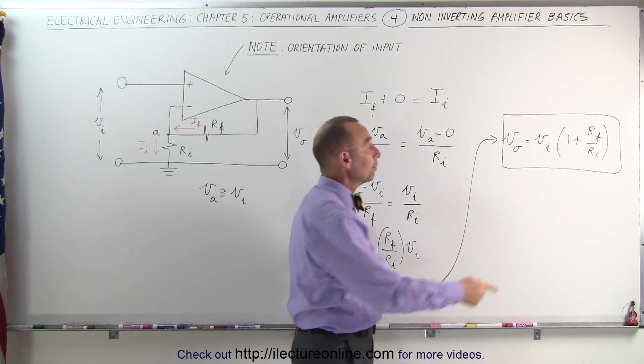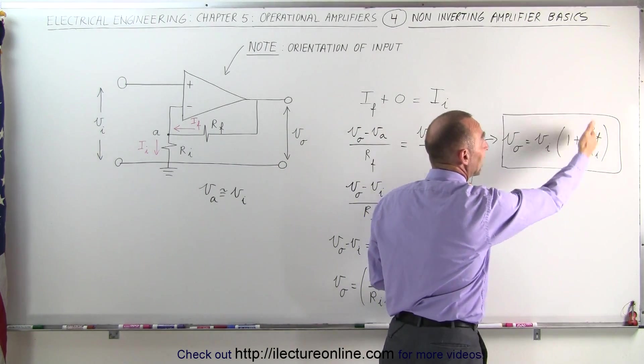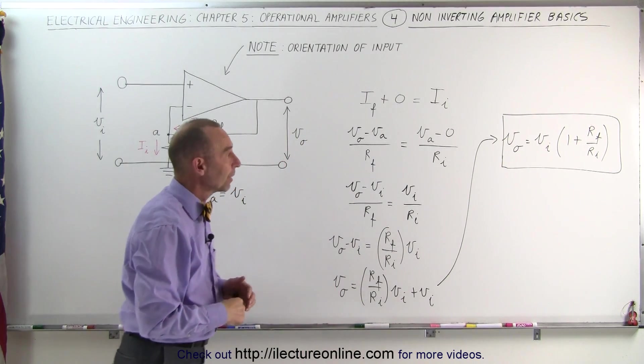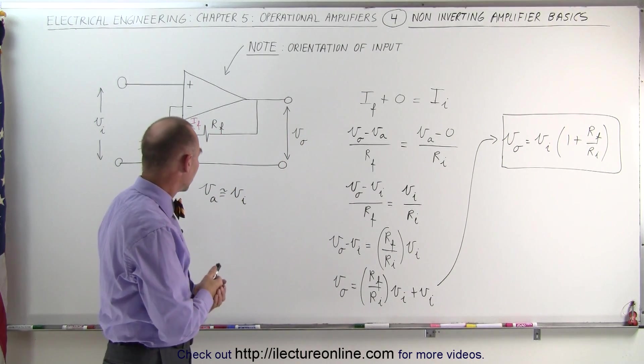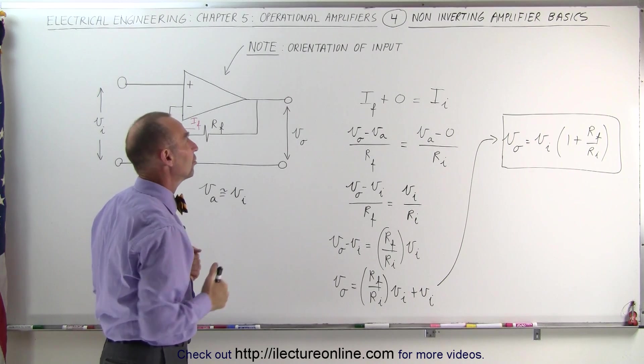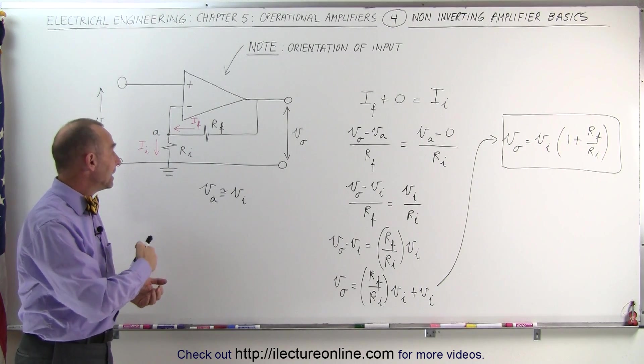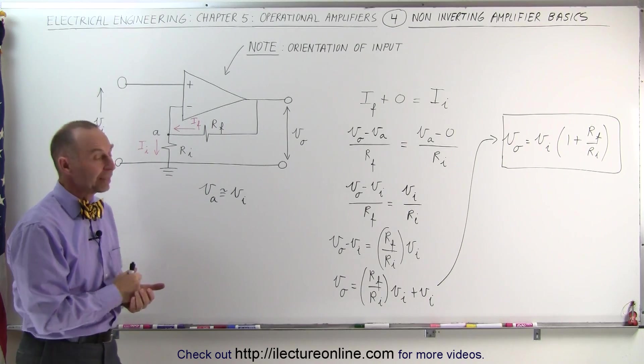Now, if the gain factor is large, we can pretty well ignore the plus one. But if the gain factor is relatively small, then the plus one does make quite a bit of difference. But at least now we have the output voltage in terms of input voltage, and that is the general way in which we connect the operational amplifier in the non-inverting mode. And that's how it's done.